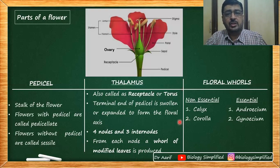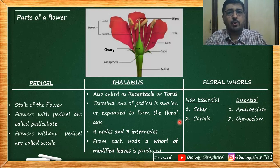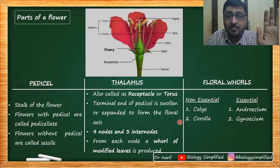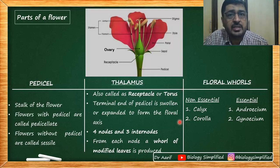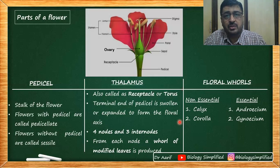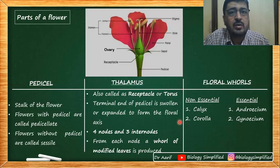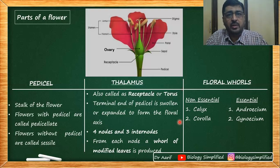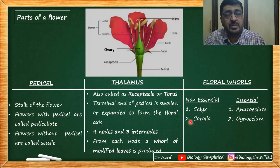We have non-essential floral whorls — calyx and corolla — and essential floral whorls — androecium and gynoecium. Non-essential because reproduction can happen without them; reproduction is the main function of the flower. Essential because without either androecium or gynoecium, reproduction in the flower is not possible. The three parts of a flower are the pedicel, the thalamus, and the floral whorls.